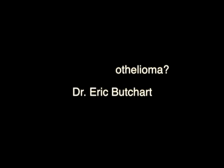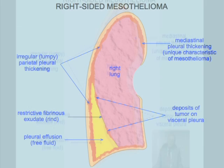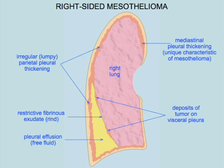Mesothelioma is a malignant tumor of the lining membrane that surrounds the lung and the inside of the chest wall, called the pleura. So it's called malignant mesothelioma of the pleura.